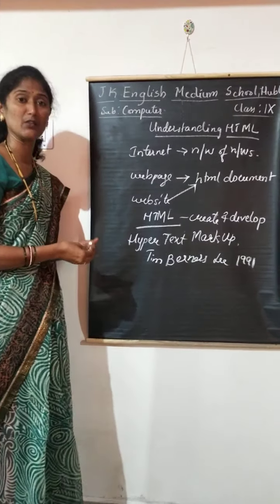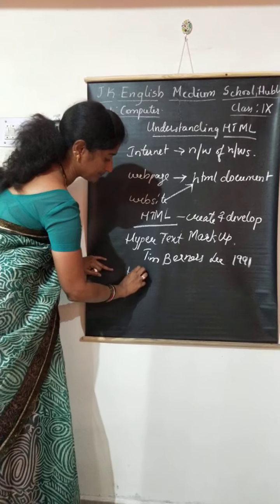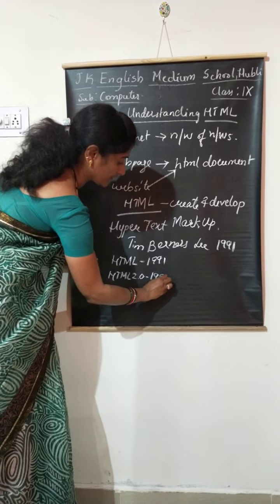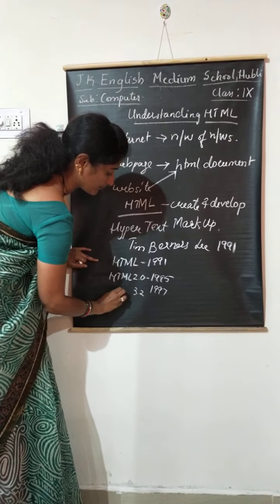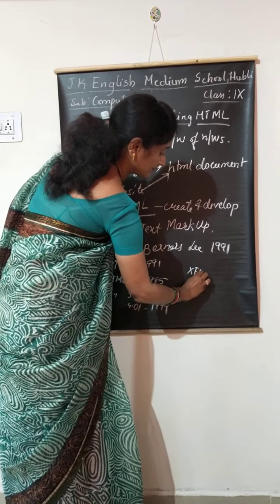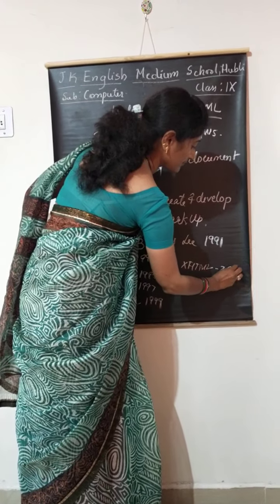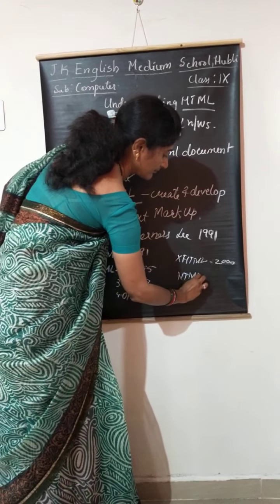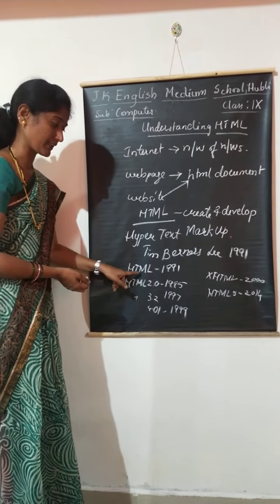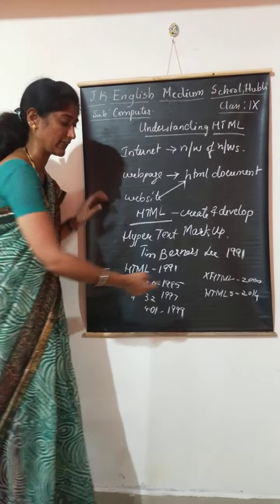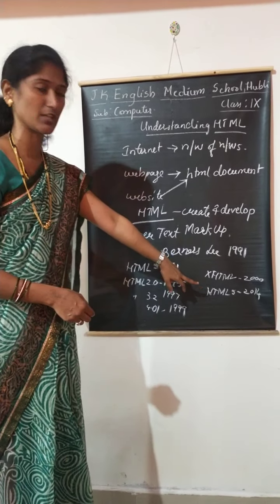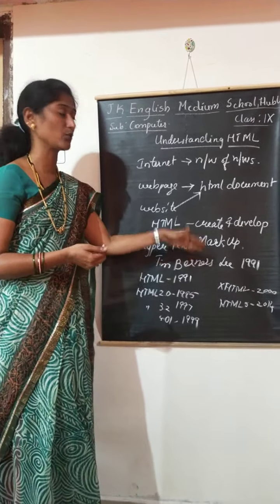In HTML we have many versions. HTML was first released in 1991, then HTML 2.0 in 1995, 3.2 in 1997, 4.01 in 1999, then XHTML in 2000, and HTML 5 in 2014. These are all the versions of HTML. With each newer version you get some advanced features and additional tags.